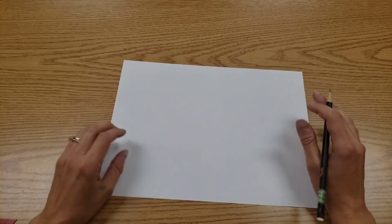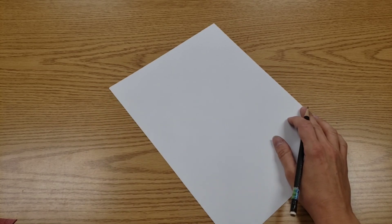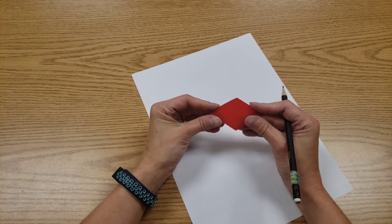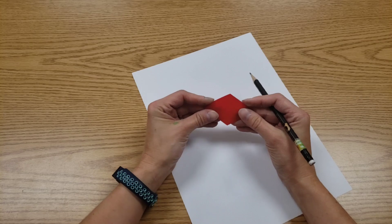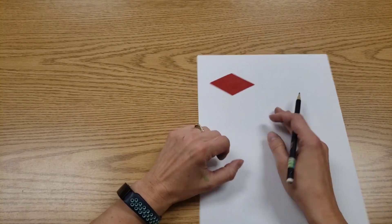Hello artists! Today we're going to make a stack of cubes. These are known as isometric cubes because on this little, well it looks like a diamond, every side is exactly the same length. So it's an isometric parallelogram.